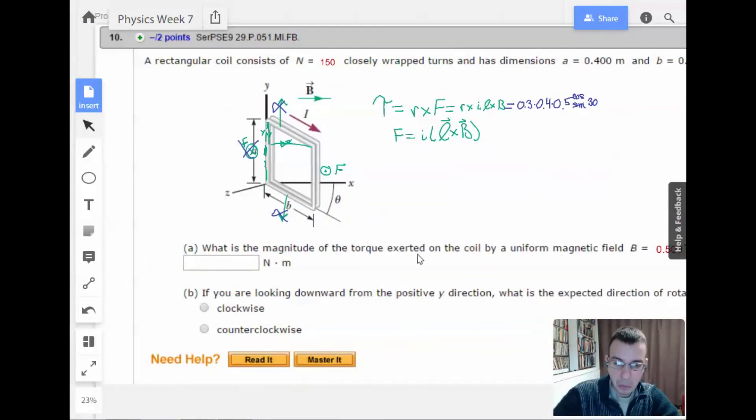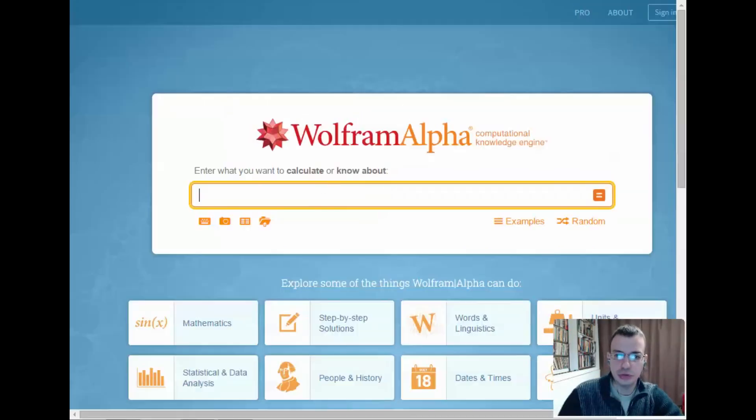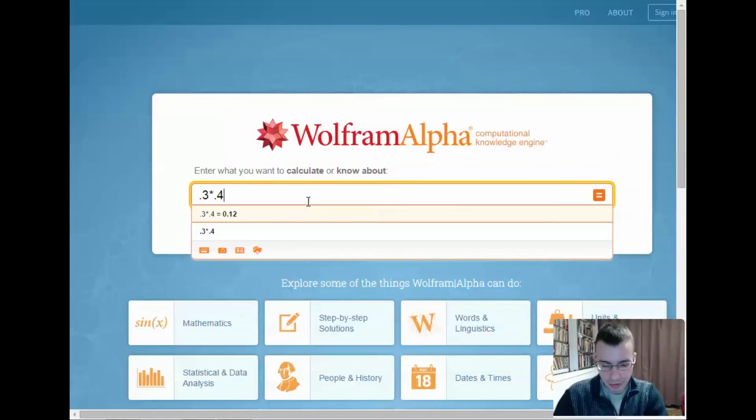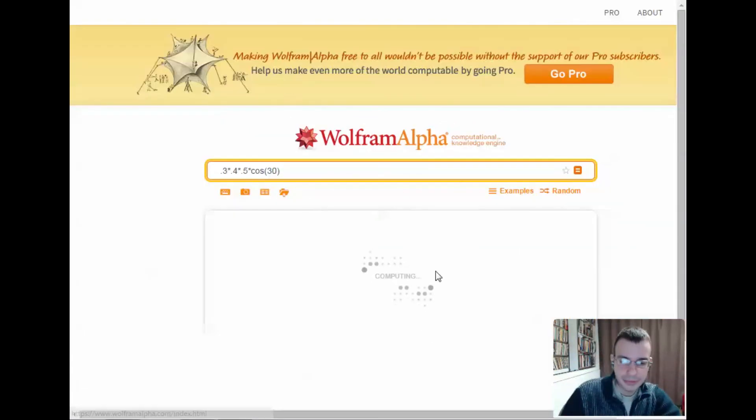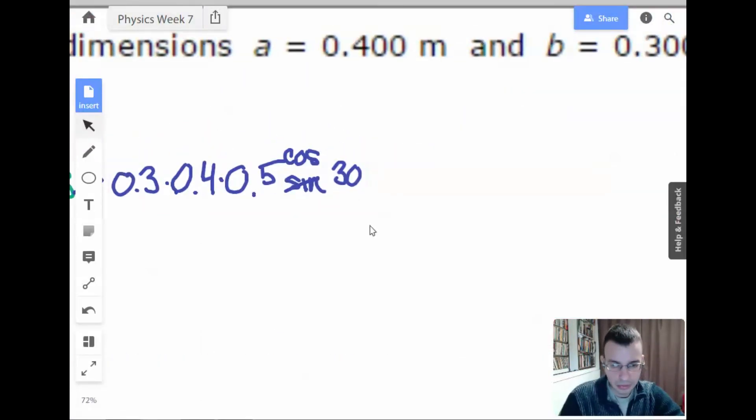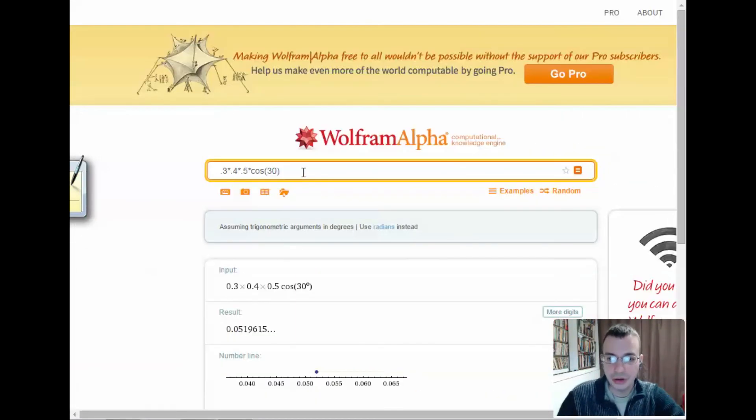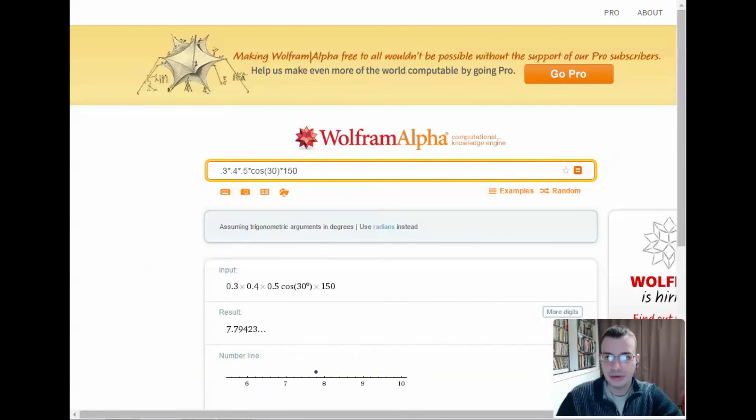Let's do this: 0.3 times 0.4 times 0.5 times cosine of 30. That gives us 0.052. Now we have 150 coils so we're going to have to multiply it by 150 to get the total torque. 7.79, I'm good with that.